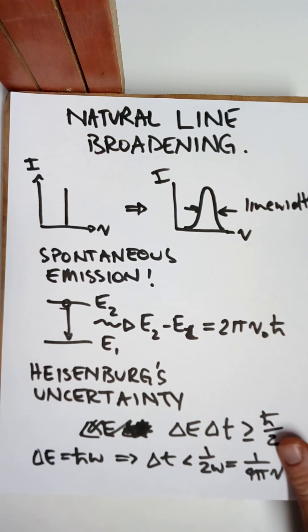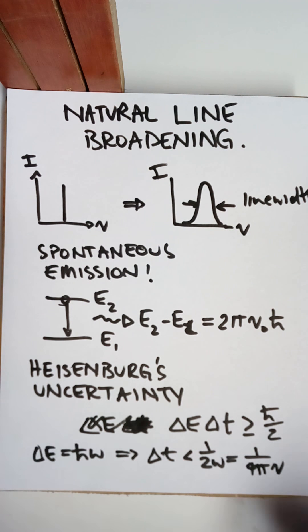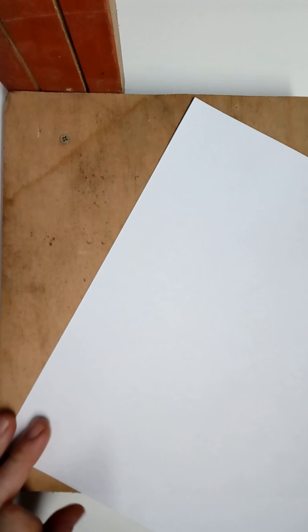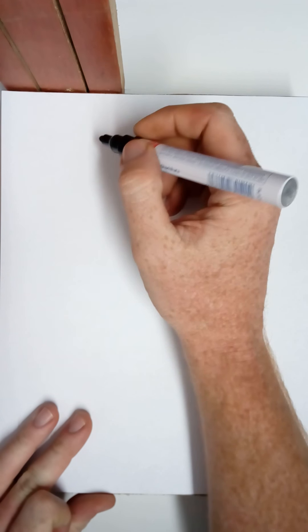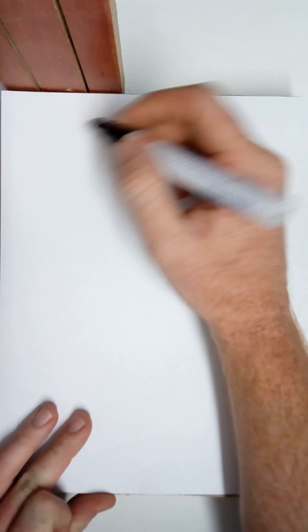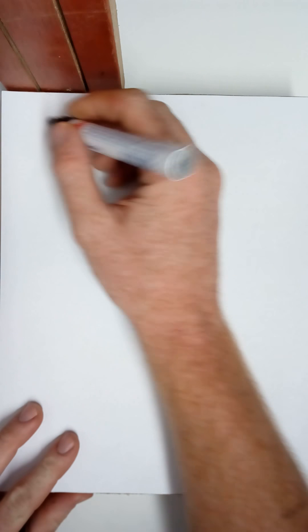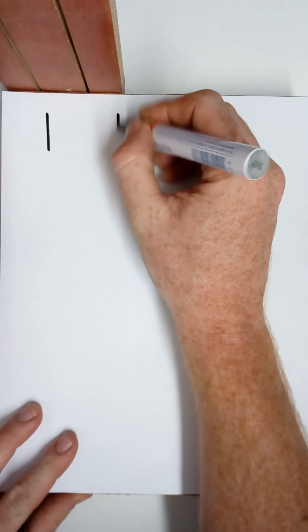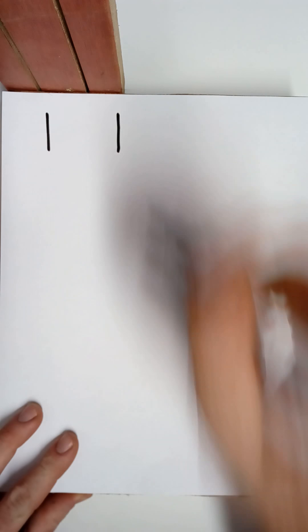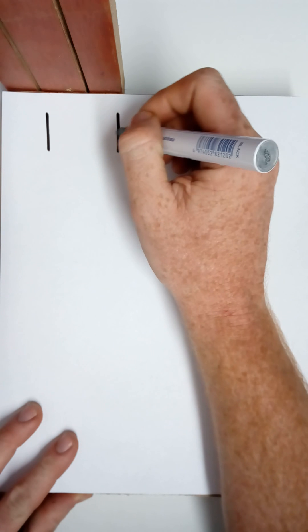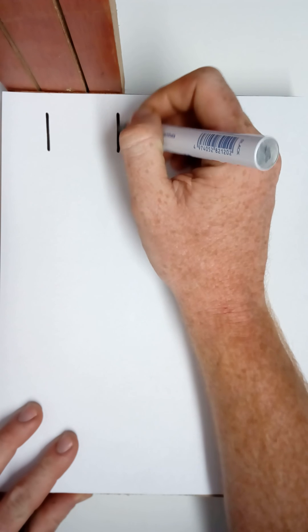Also, there's this crazy thing called the Casimir force. So I'll go to the next page. So another idea is that these particles or photons that are brought into existence, they have to satisfy some boundary conditions.